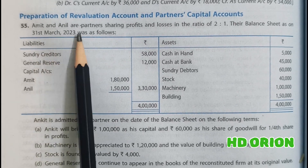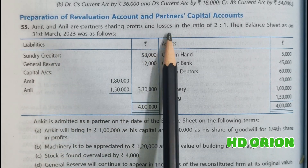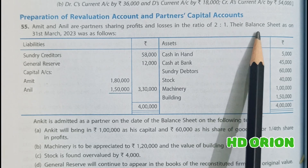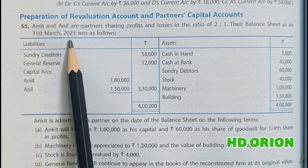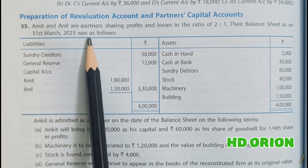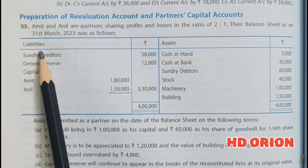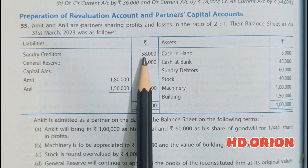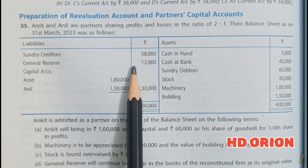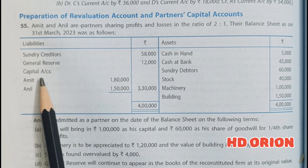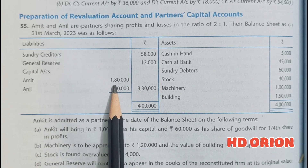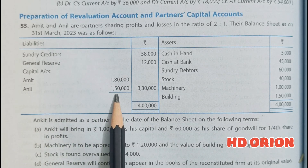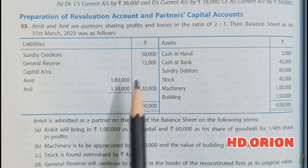Amit and Anil are partners sharing profits and losses in the ratio of 2 to 1. Their balance sheet as on 31st March 2023 was as follows. Liabilities: sundry creditors rupees 58,000; general reserve rupees 12,000; capital Amit rupees 1,80,000; capital Anil rupees 1,50,000.